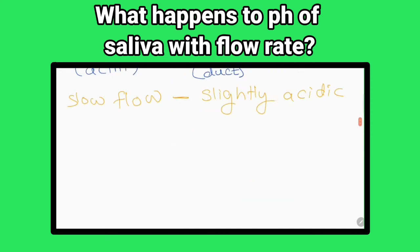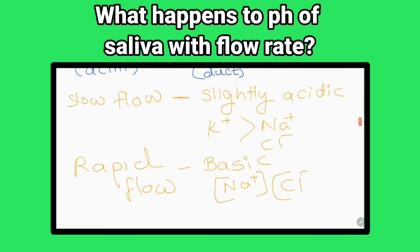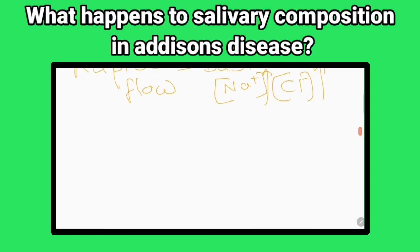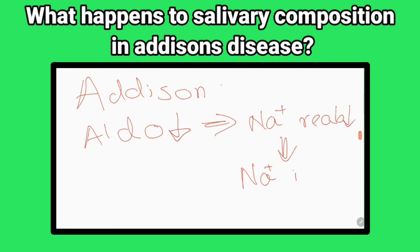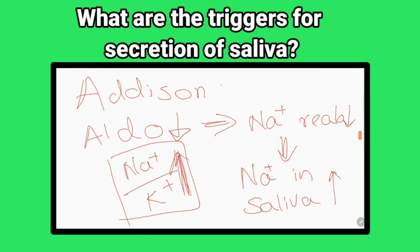What happens to the pH of saliva with flow rate? Saliva has a basic pH when there is rapid flow, and an acidic pH when there is slow flow. What happens to salivary composition in Addison's disease? Usually aldosterone reabsorbs sodium from saliva, but as aldosterone secretion is low in this condition, sodium concentration in the saliva gets increased.